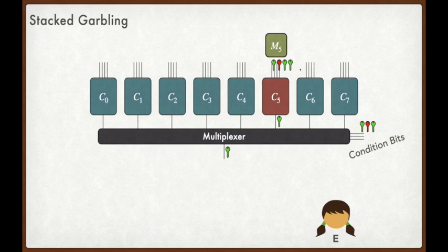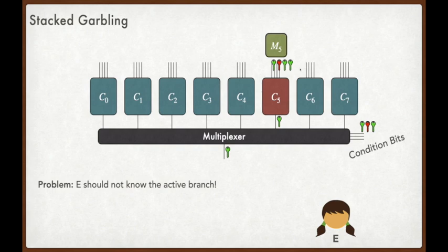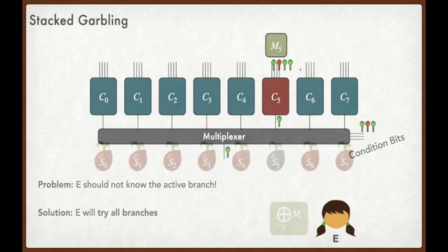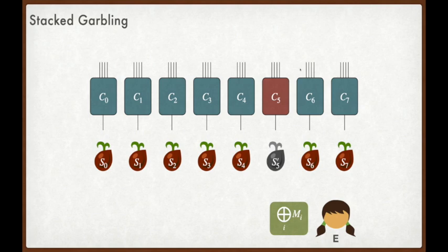Much like the standard handling of conditional branching, we also need a multiplexer component to do stacked garbling. However, this multiplexer component is a special garbled gadget that needs to more carefully dispose of the outputs from the inactive branches. There remains a key problem. We assumed that the evaluator E knows which branch is active, but in general, of course, she does not. Moreover, she should not learn which branch is active — this would be insecure. Stacked garbling's solution to this problem is actually quite straightforward. E will simply try to evaluate each of the branches.